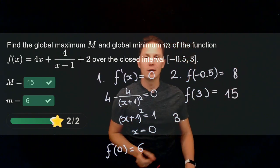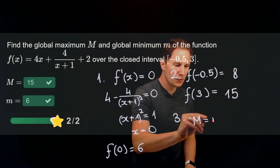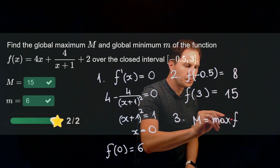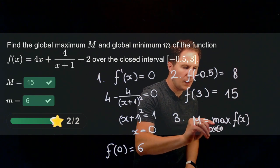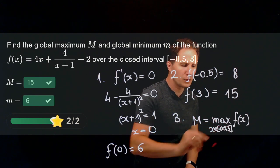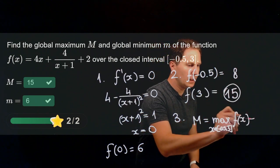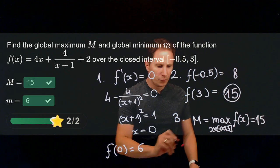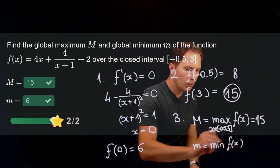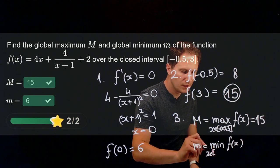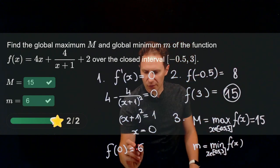Step three: find the global maximum by choosing the largest of the values found. Out of 6, 8, and 15, the largest is 15 — that is the global maximum. For the global minimum, choose the smallest: out of 15, 8, and 6, the smallest is 6. So the global minimum is 6.